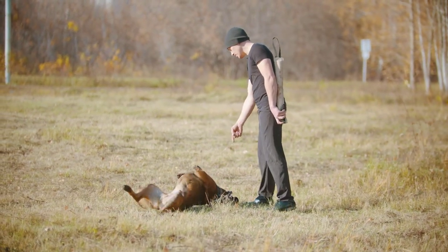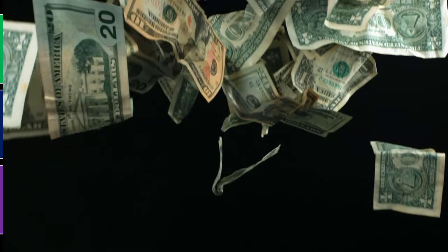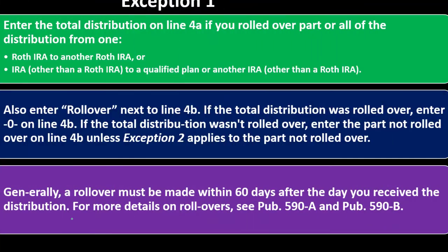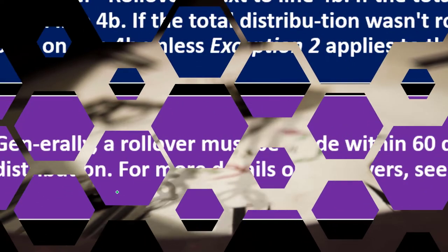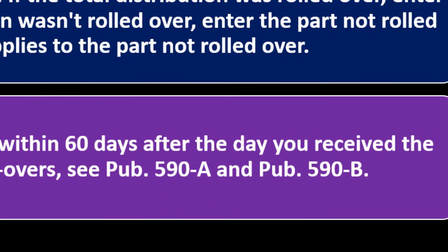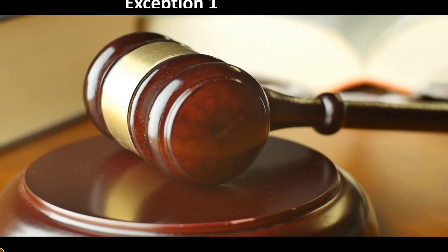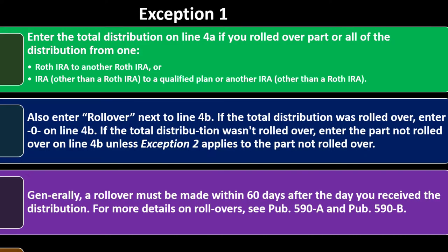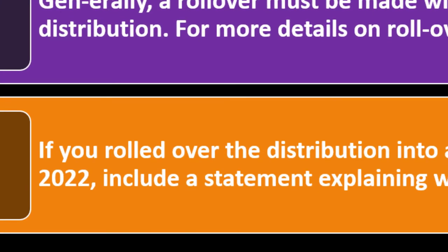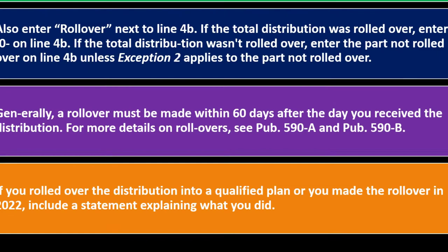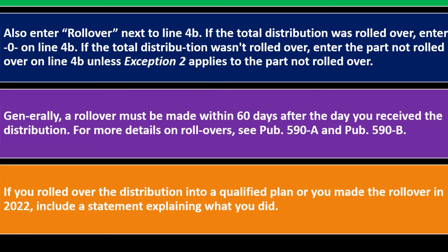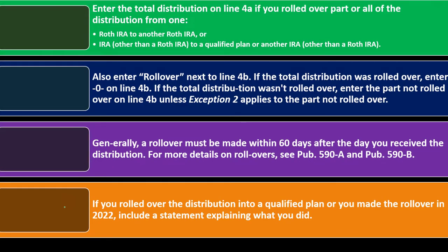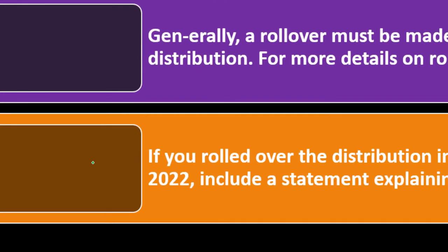However, you might be in a situation where you draw the money out to put it into another type of investment under an IRA umbrella. In that case, there's a time frame for how long you can hold the money before putting it back, so you don't get subject to distribution penalties. A rollover must be made within 60 days after the day you receive the distribution. If you rolled over the distribution into a qualified plan in 2022, include a statement explaining what you did.